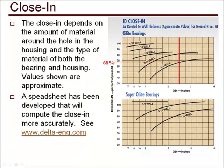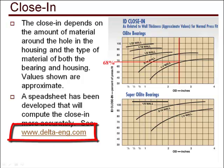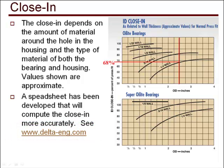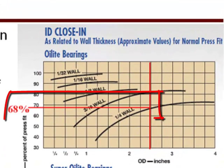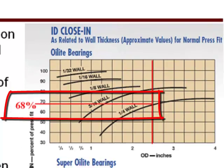Close-in depends on the material of the internal and external members of a press fit assembly. Also, the dimensions of the two members affect the close-in. The chart shown is a rough estimate for close-in. If a closer value is needed, there is a spreadsheet that can be downloaded from the website shown that will compute this much more accurately, plus it will compute the stresses in both members. For the problem here, we're going to estimate the close-in at 68%.